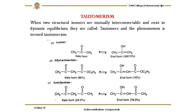When two structural isomers are mutually interconvertible and exist in a dynamic equilibrium, they are called tautomers and this phenomenon is termed tautomerism. For example, acetone can exist in two forms: the keto form or the enol form. These are not different compounds — in a single molecule, the bond breaks and re-forms on the other side, showing dynamic equilibrium between the two forms.